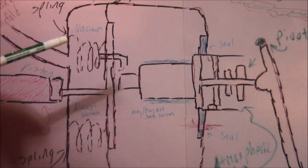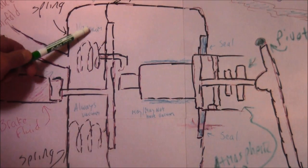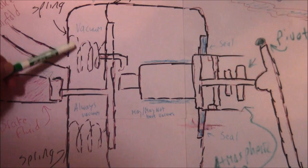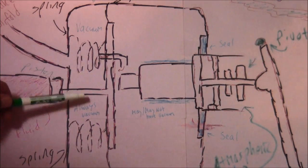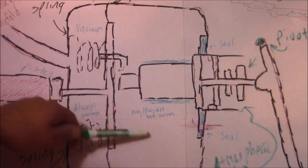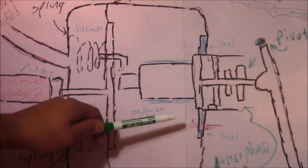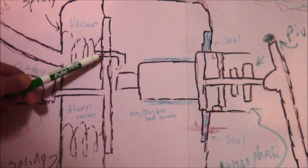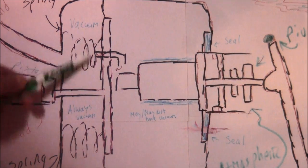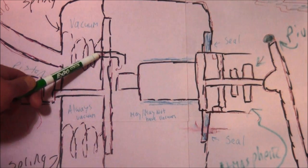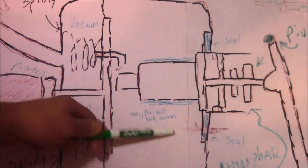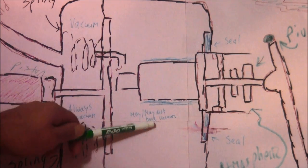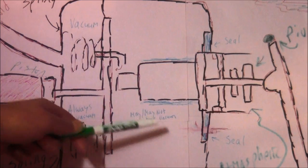Now in this drawing, you have a vacuum chamber on this side, and then over here you have a chamber where it may or may not be a vacuum. This little area right here is where the vacuum can go into this chamber right here that makes it a vacuum or not.